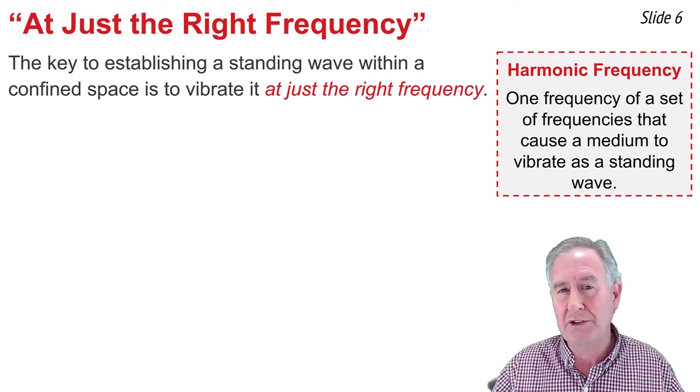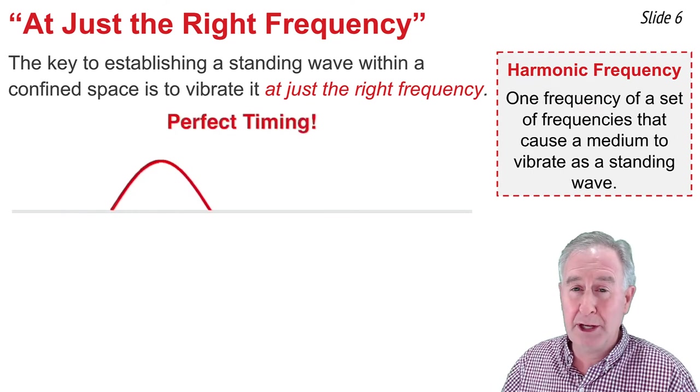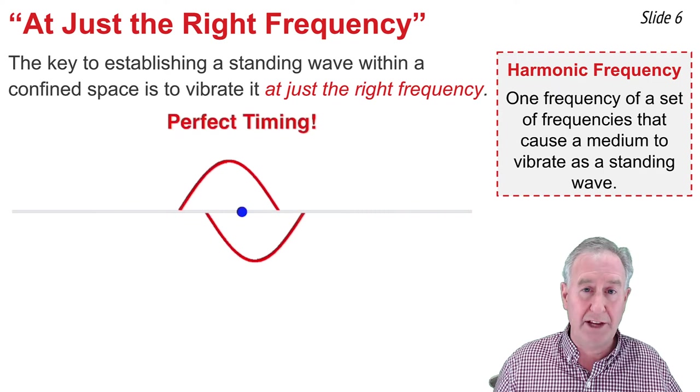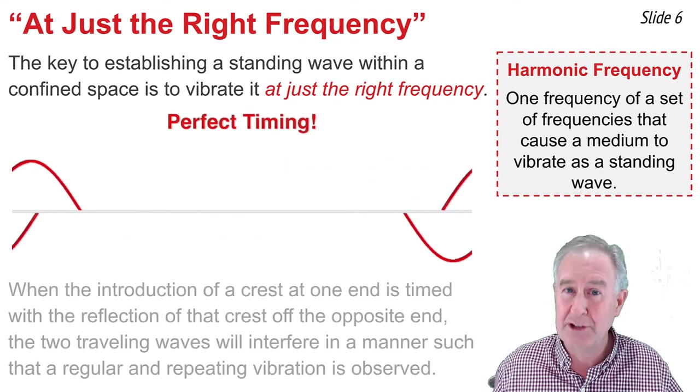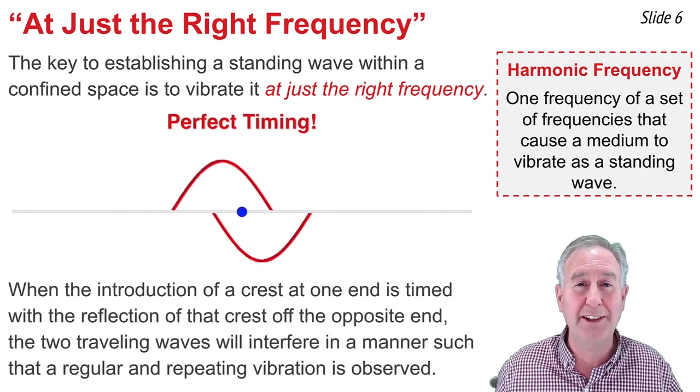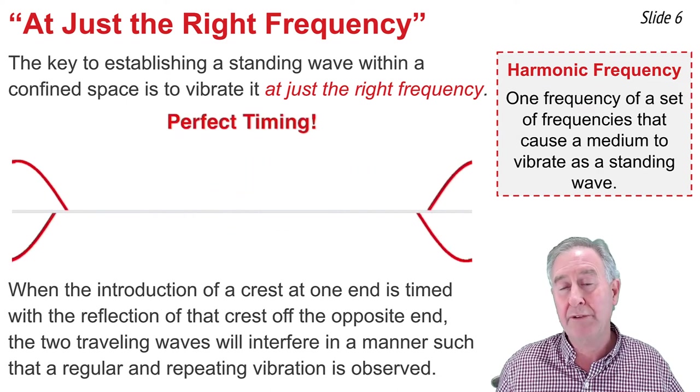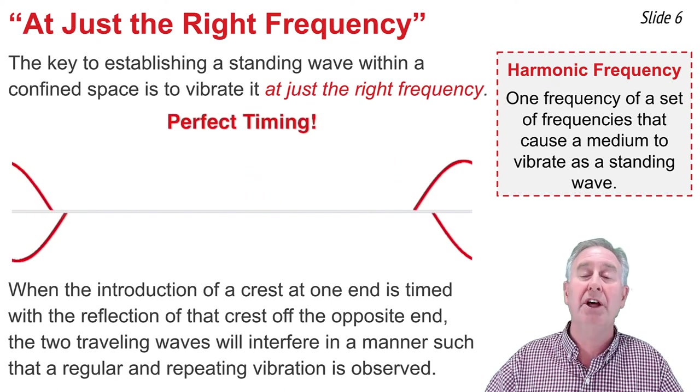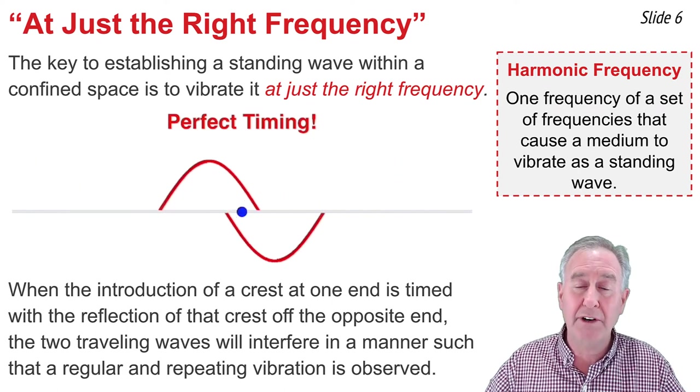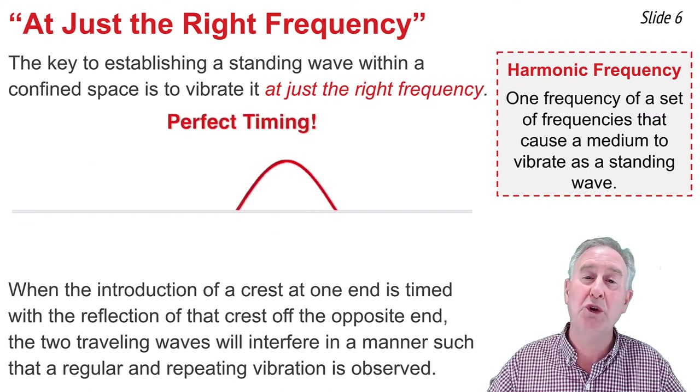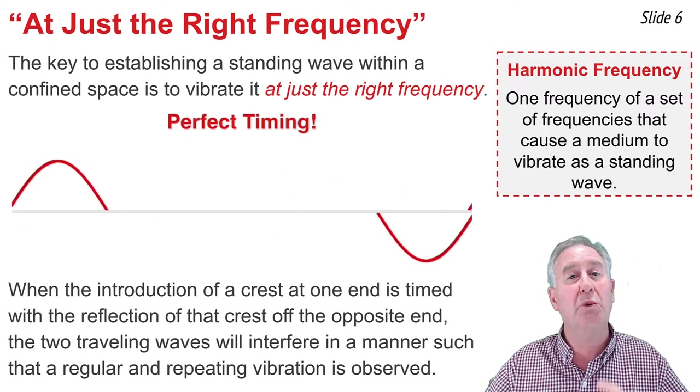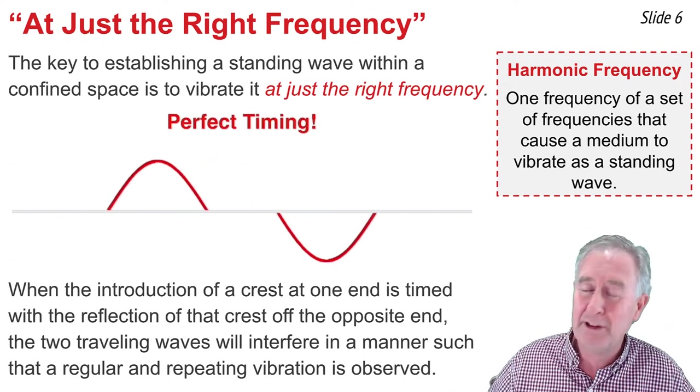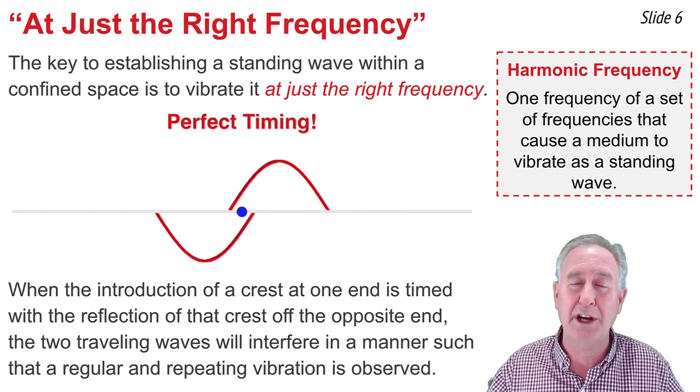Now, to illustrate the importance of perfect timing, consider this animation here. One way to get a standing wave is to introduce a wave crest at the exact moment that the previous wave crest is reflecting off the end of the medium. That will create a wave crest coming in and meeting a reflected wave crest exactly in the middle of the medium, resulting in destructive interference in the middle of the medium and the formation of a nodal point there. And the node will always be there, whether I put a trough into the medium at the exact same time the previous trough is reflecting or a crest when the previous crest is reflecting.